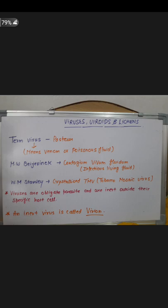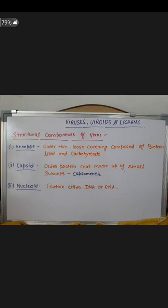Viruses are obligate parasites and are inert outside the specific host cell. The virus will always depend on someone else. If it is outside the host cell, it is inert. An inert virus outside the host cell is called a virion.